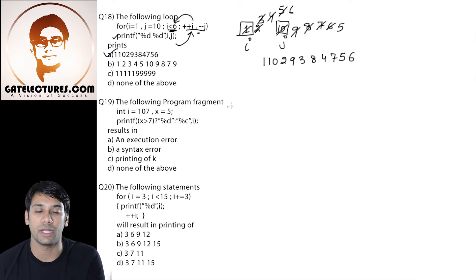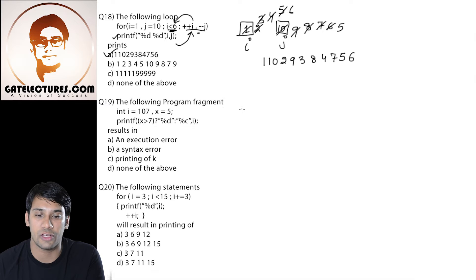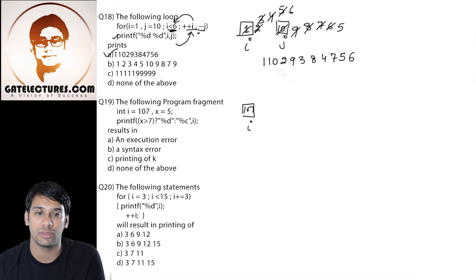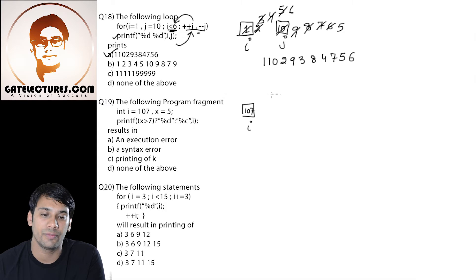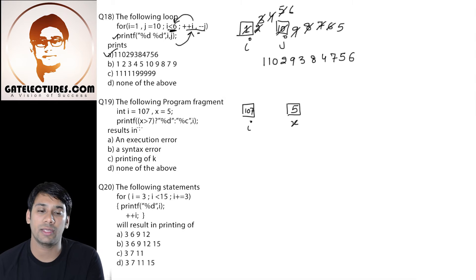Now check out question number 19. In question number 19, we are having two variables: the variable i and the variable x. The value stored in the variable i is 107 and the value stored in the variable x is 5. Then in the printf statement, we are having a condition.